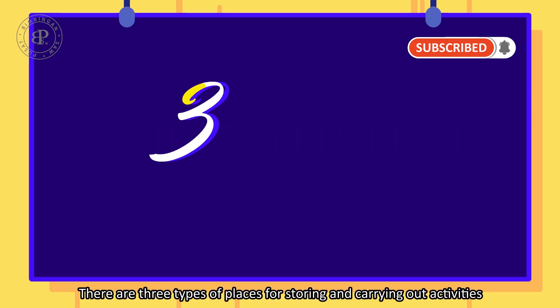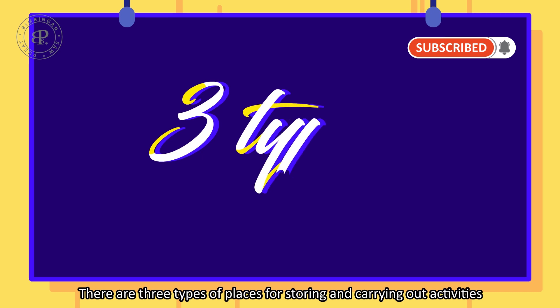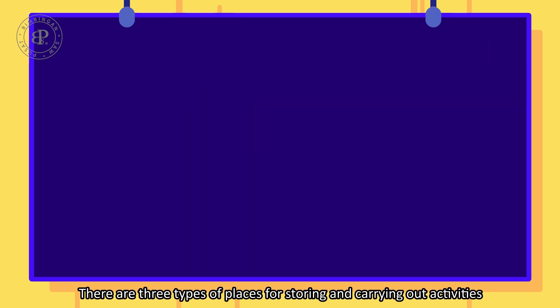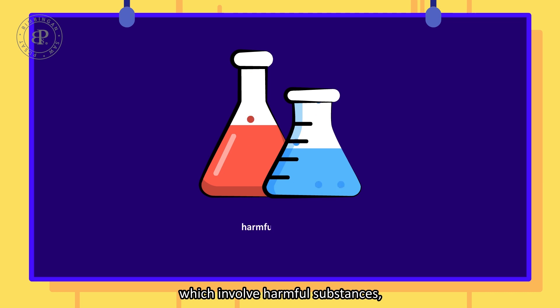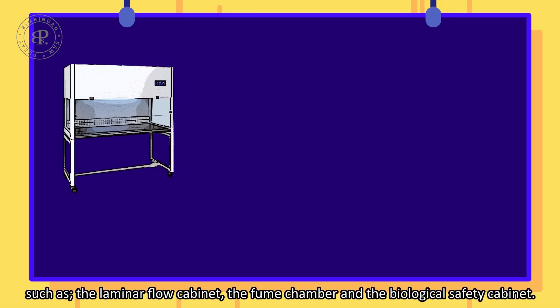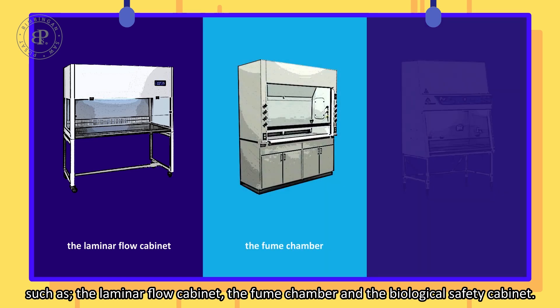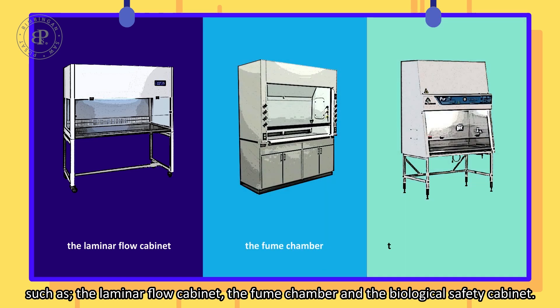There are three types of places for storing and carrying out activities which involve harmful substances: the laminar flow cabinet, the film chamber, and a biological safety cabinet.